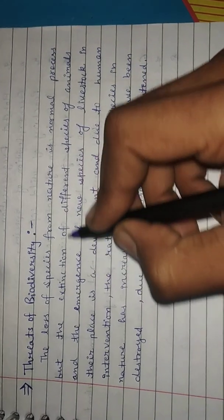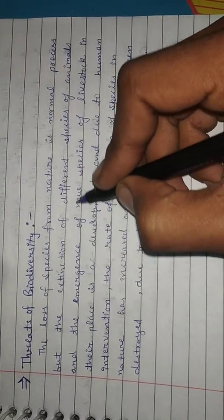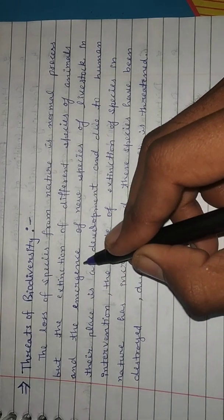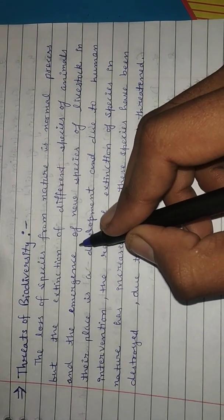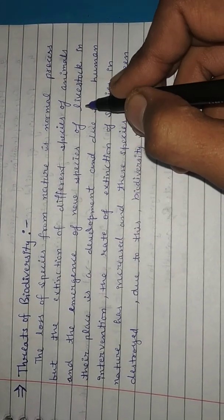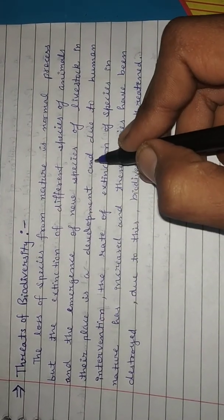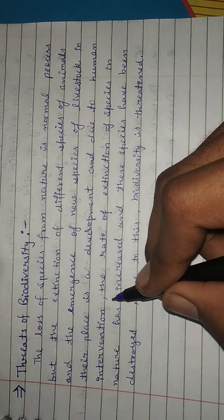The loss of species from nature is a normal process, but the extinction of different species of animals and the emergence of new species of livestock is their place as a development. Due to human intervention,